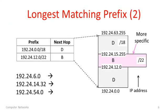Let's work through an example to see how these prefixes can overlap and what it means. Here's the same table from before with the address ranges, and I'm going to show them on this figure. IP addresses go from all zeros at the bottom to 255.255.255.255 at the top. The first prefix has a bottom address of 192.24.0.0, drawn here at the bottom. The next prefix in the table has a bottom address of 192.24.12.0, which is higher. We don't have the top addresses yet — let's calculate them.